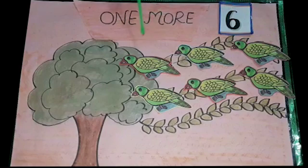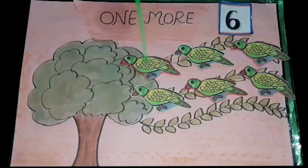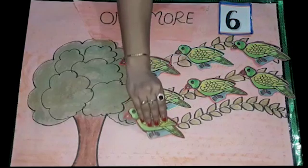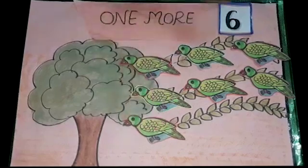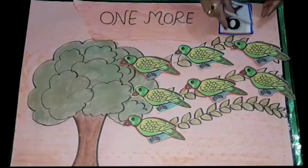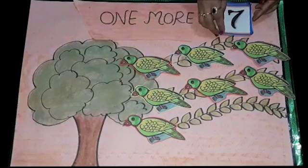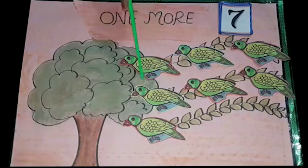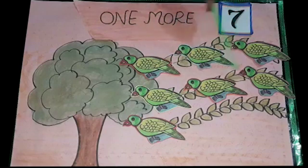Six green parrots enjoy the heaven. One more joined them, now they are seven. Six plus one is equal to seven. Seven green parrots have to wait.